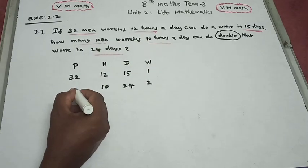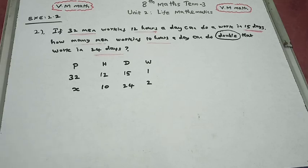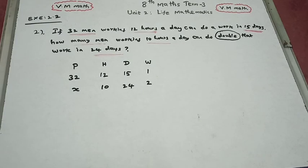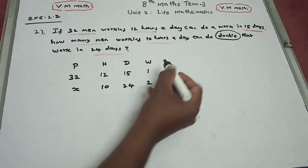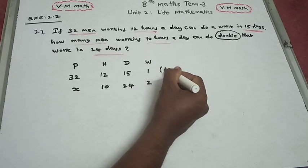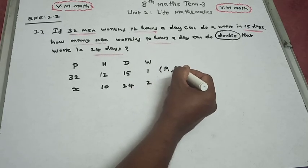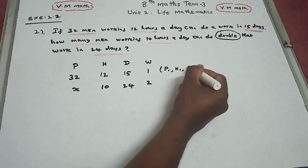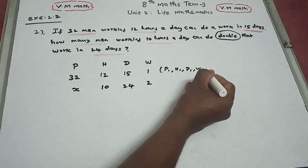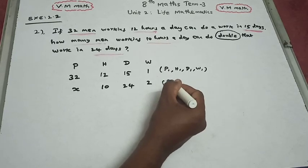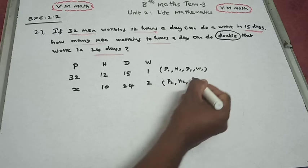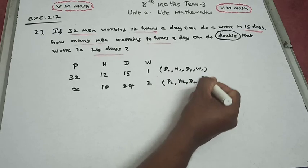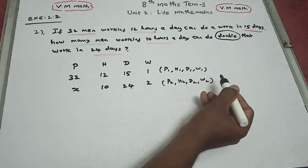Eventually we need to find the number of persons, that is x. So this is P1, this is H1, this is D1, this is W1. P1 into H1 into D1 into W1. Next row is P2, H2, D2, W2.